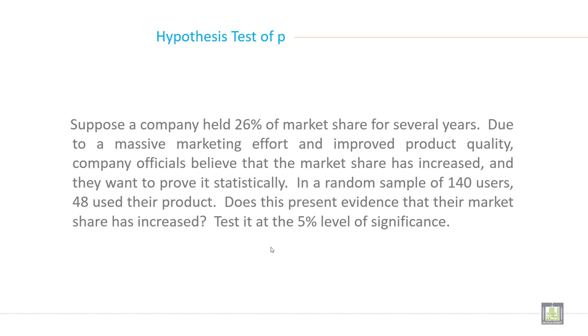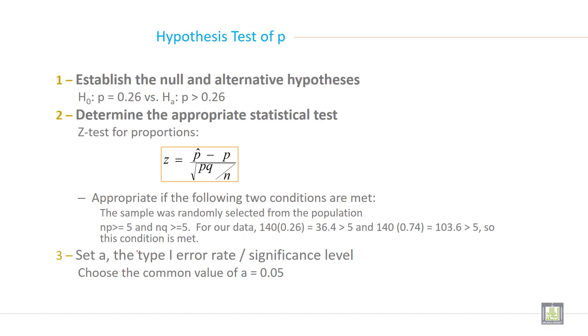Just remember these points for testing of hypothesis for a proportion. The first step is to write the null and alternate hypothesis. Here the null hypothesis is p = 0.26 and the alternate hypothesis, because the researcher wants to test whether it is increased or not, the alternate hypothesis will be p greater than 0.26. Then determine the appropriate test. The Z test because the sample size is more.